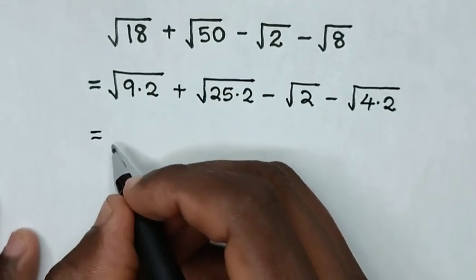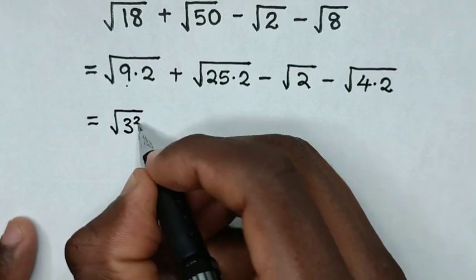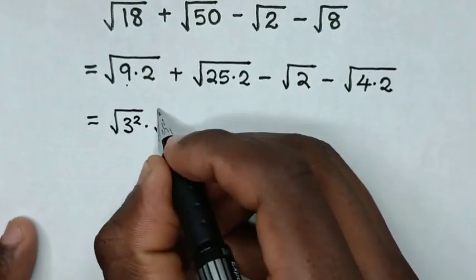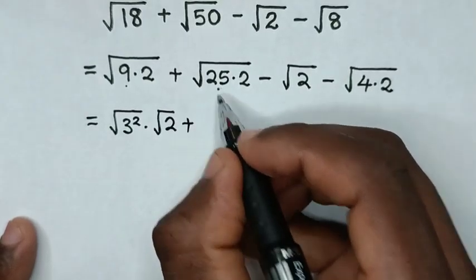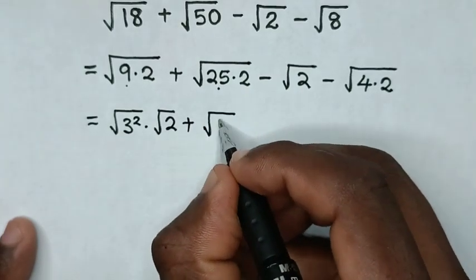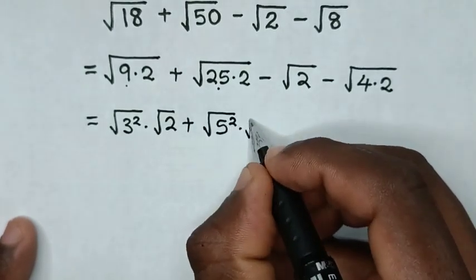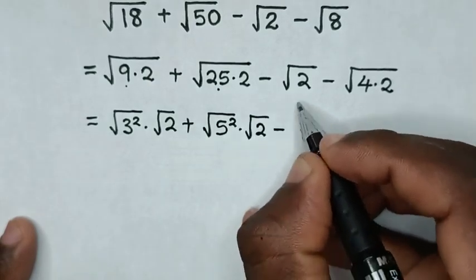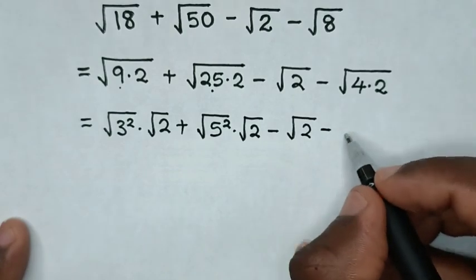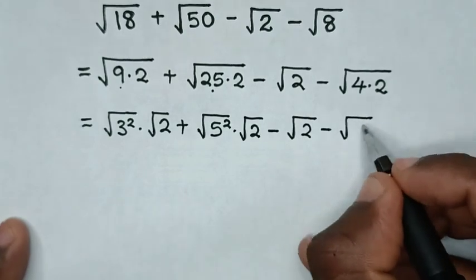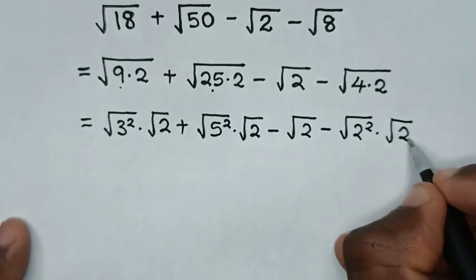Then it will be equal to: square root of 9 is the same as square root of 3 squared, then times square root of 2; then plus square root of 25 is the same as square root of 5 squared, then times square root of 2; then minus square root of 2; then minus square root of 4 is the same as square root of 2 squared, then times square root of 2.